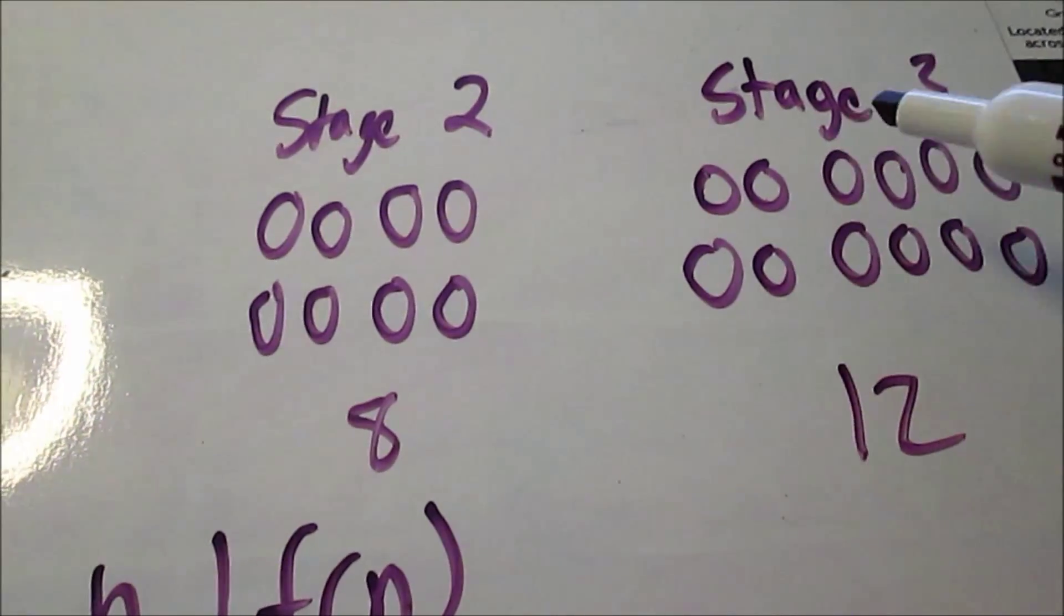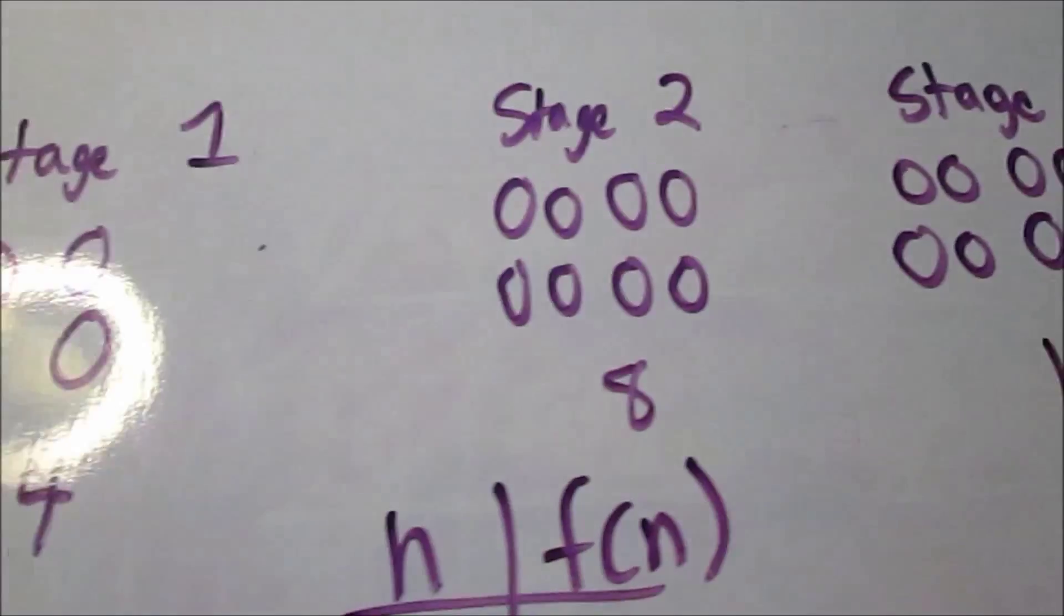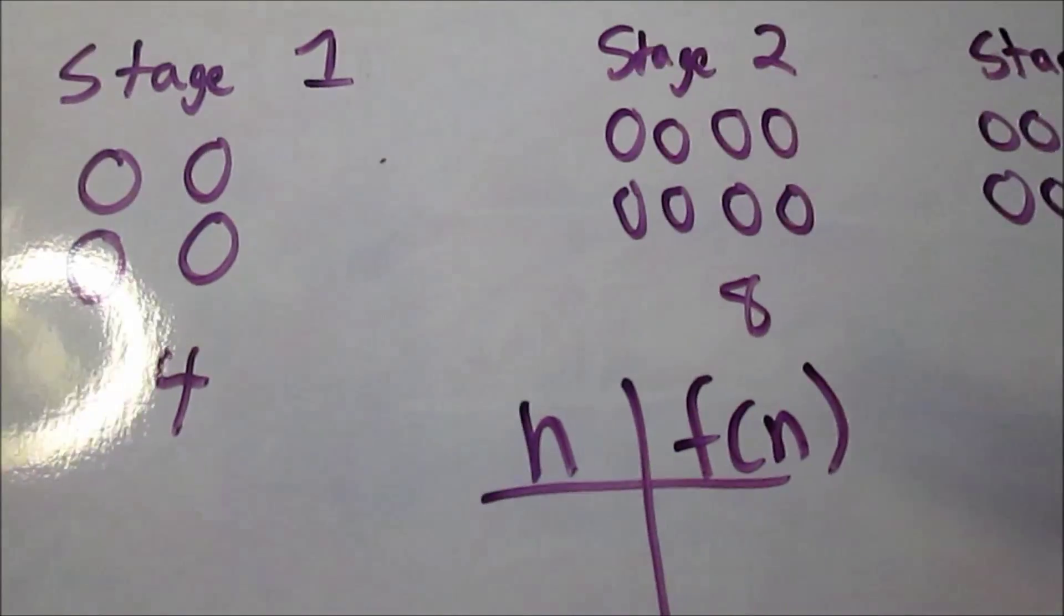I just count each time I reach a new stage, I count the number of circles. And at the end of all this, I create a table.